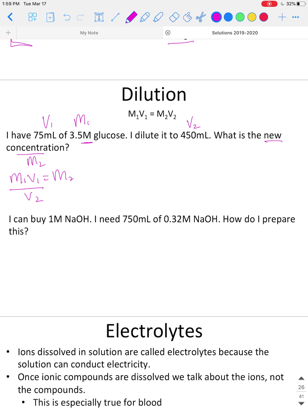Let's just plug in M1V1: 3.5 molar times 75 milliliters. It doesn't matter if I wrote volume or molarity first here, as long as I have both in the numerator. I'm going to divide it by V2, which is 450 milliliters, and that's going to give me M2. So now we just do 3.5 times 75 divided by 450.